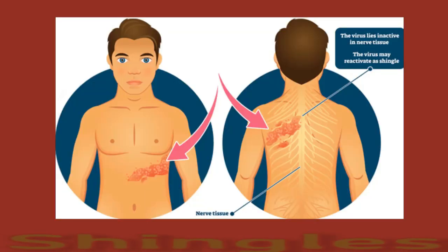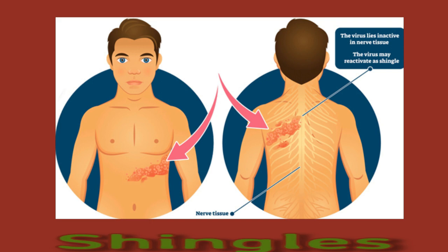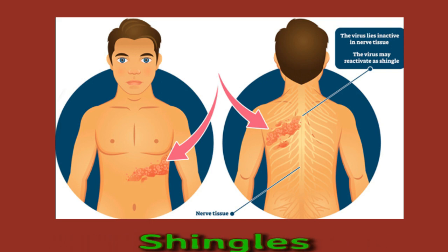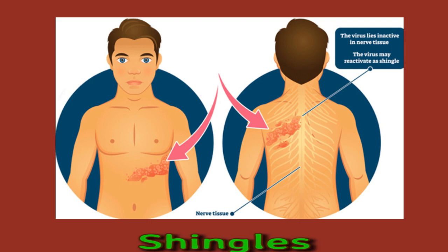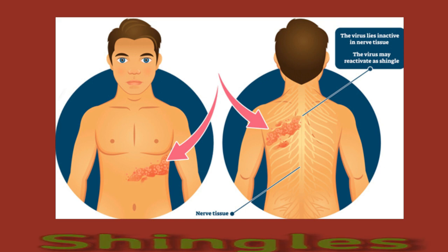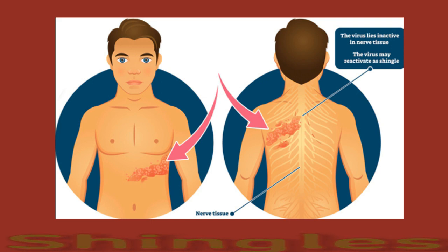Shingles is caused by the same virus that causes chickenpox. Once a person has had chickenpox, the virus stays dormant in the body for the rest of their life. Sometimes the virus can reactivate, causing pain and a rash that may wrap around one side of the abdomen. Doctors usually prescribe antiviral medications for shingles. Oatmeal baths or cool cloths for the skin may help ease discomfort. Vaccines are available to help reduce the risk of developing shingles later in life.